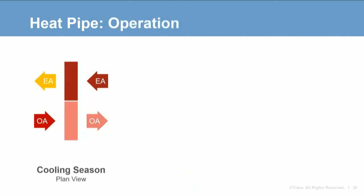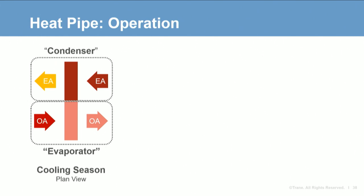Here's an overhead view of a heat pipe illustrating an outdoor air preconditioning arrangement during the cooling season. The outdoor air is warmer than the exhaust air, so the evaporator is in the outdoor airstream and the condenser is in the exhaust airstream. Refrigerant is evaporated by the warmer outdoor air, and the refrigerant vapor pressure increases. The vapor migrates to condense and release heat to the exhaust airstream where the vapor pressure is lower. Liquid refrigerant wicks back to the evaporator section and the cycle is repeated.